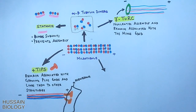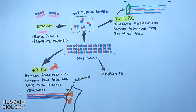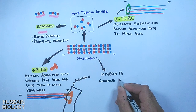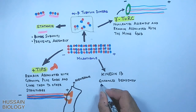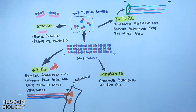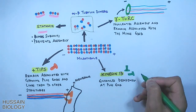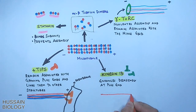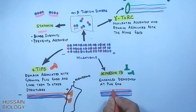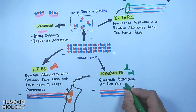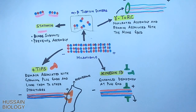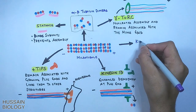Moving to depolymerizing proteins — kinesin-13 enhances disassembly at the plus end, as shown in the diagram, where it binds to the plus end and removes the dimers from the microtubule.